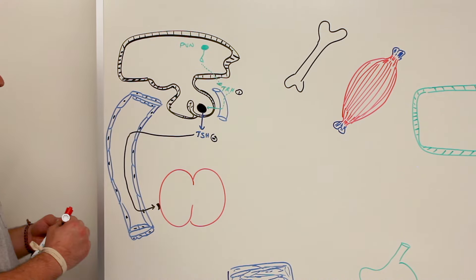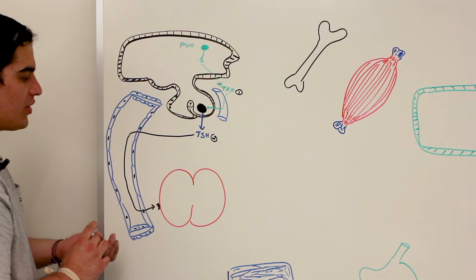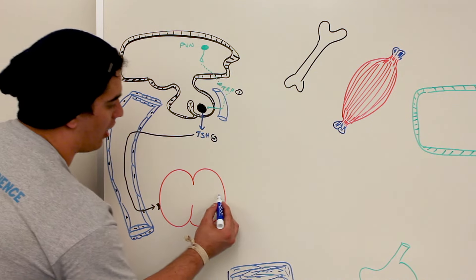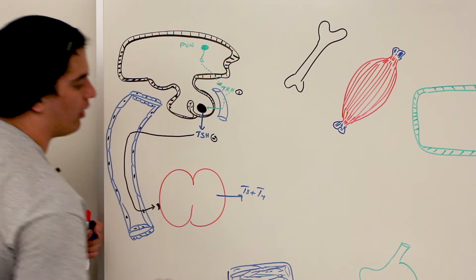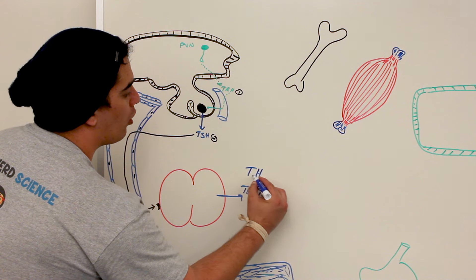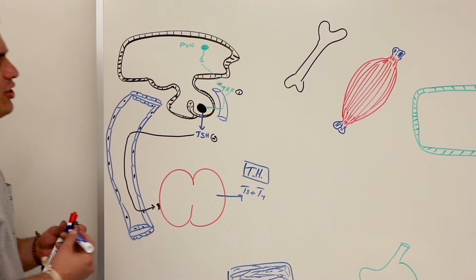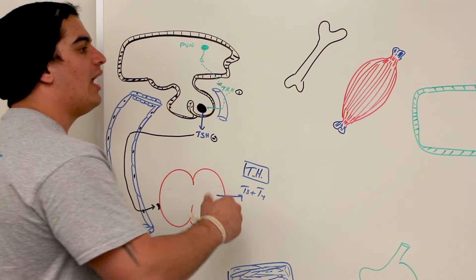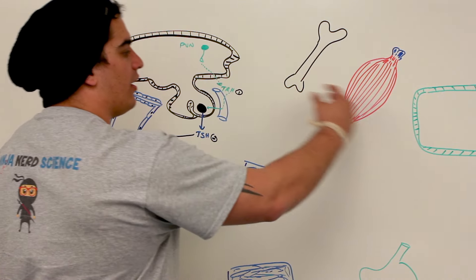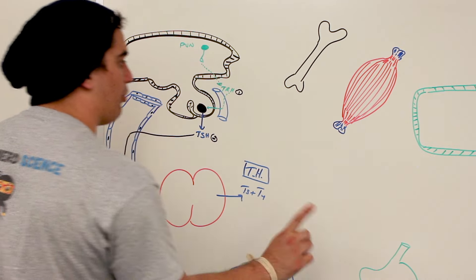When it acts on the thyroid gland, if you remember we said that the overall result of this was the production of T3 and T4, which stands for our thyroid hormone. And then we said that it's transported in the bloodstream through the thyroxine binding globulins and exerts its effects on various different target organs, which we're going to talk about in a brief second here.